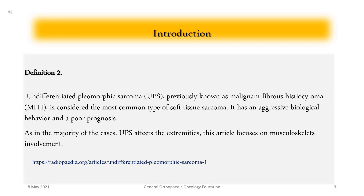Undifferentiated pleomorphic sarcoma (UPS), previously known as malignant fibrous histiocytoma (MFH), is considered the most common type of soft tissue sarcoma. It has an aggressive biological behavior and a poor prognosis. In the majority of cases, UPS affects the extremities, and this discussion focuses on musculoskeletal involvement.